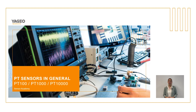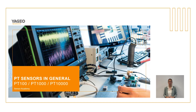In the specification of our sensors, we indicate the nominal resistance at zero degrees Celsius. Accordingly, a PT100 has a resistance of 100 ohms at zero degrees Celsius, and a PT1000 has a resistance of 1000 ohms at zero degrees Celsius. We offer a PT100 and a PT1000 as standard products.